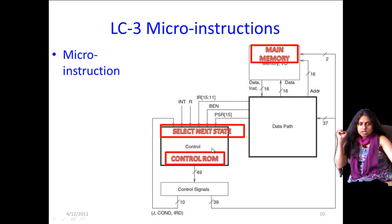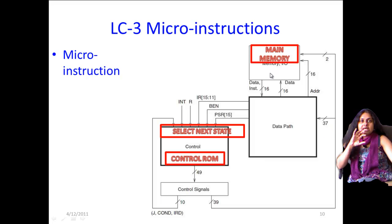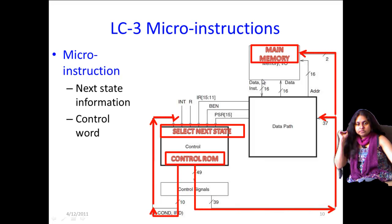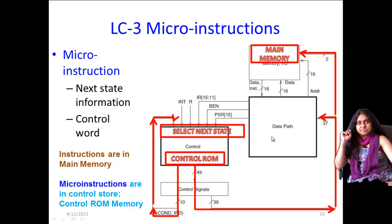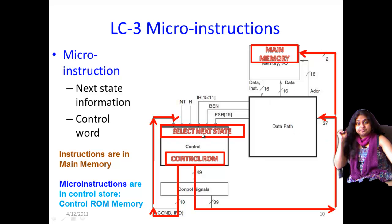In the context of the LC3, we can divide any processor into three broad subsystems: the memory or IO subsystem, the data path subsystem which actually manipulates data by adding, subtracting, or incrementing operands, and the control subsystem. We are going to focus on the control subsystem in this class.